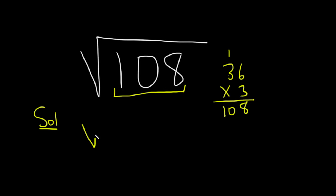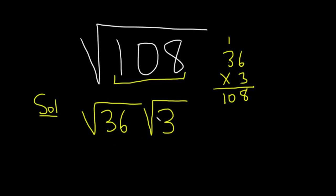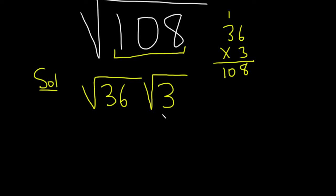So you can write this as the square root of 36 times the square root of 3, like that. And then we know something about the square root of 36. It's going to be 6. So this is 6 square root of 3.